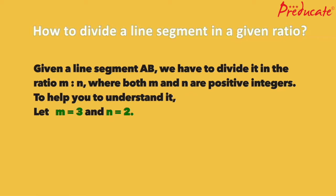The question is: given a line segment AB, we have to divide it in the ratio of M is to N, where both M and N are positive integers.